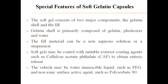The soft gelatin capsules can be coated with a suitable exterior coating such as cellulose acetate phthalate. This coating facilitates an enteric release of medicament — it prevents dissolution of the capsule shell in the stomach and facilitates dissolution after entering the intestine, achieving intestine-targeted drug release. The vehicle may be a water-immiscible liquid such as polyethylene glycol and a non-ionic surfactant such as polysorbate-80.